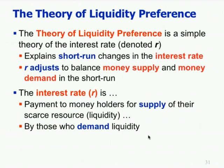The theory of liquidity preference says the interest rate adjusts to balance money supply and money demand in the short run. Prices adjust to balance money supply and money demand in the long run, but in the short run the interest rate does it because prices can't — because prices are sticky.